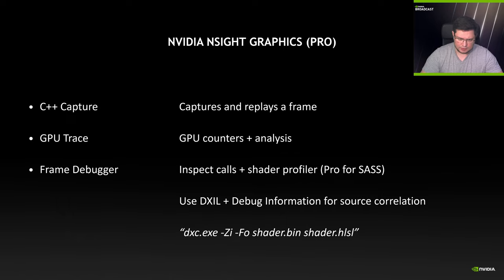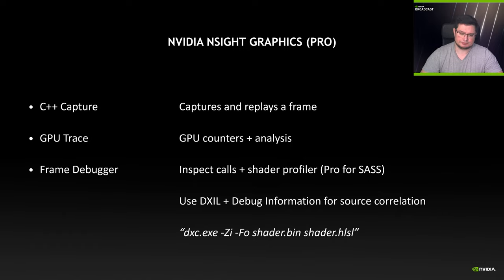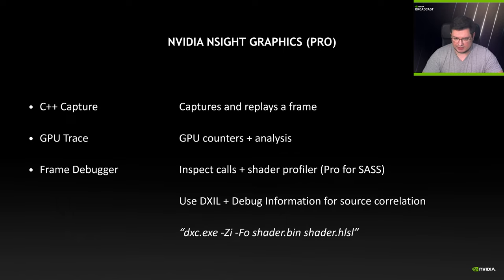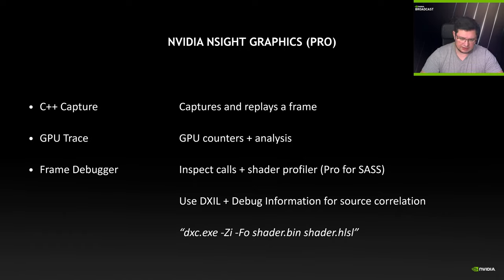However, for this example, I'm going to use the pro version of Nsight Graphics. I require the Shader Profiler to show me SAS opcode. The SAS code is very helpful if you don't have shader debug information or source correlation. Ideally, compile your shaders with DXIL and all the necessary debug information.